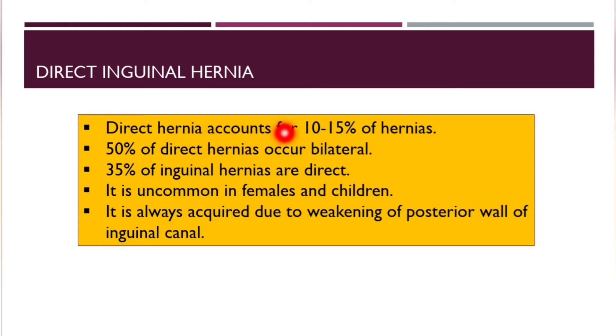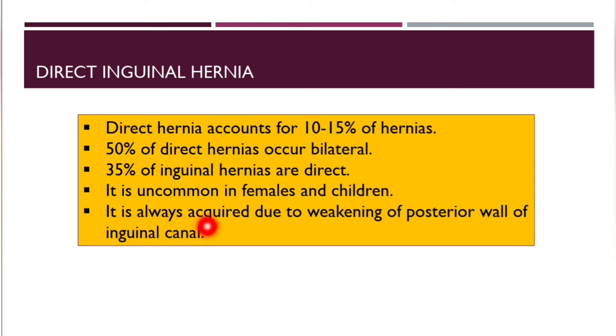Some statistics: direct hernia occurs in about 10 to 15 percent of hernias; 50 percent of direct hernias occur bilaterally; 35 percent of inguinal hernias are direct. It is uncommon in females and in children, so it is more common in the elderly. It is always acquired, due to weakening of the posterior wall of the inguinal canal.